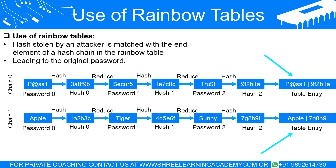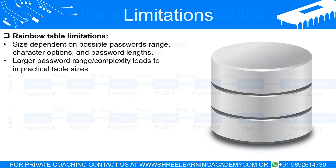Let's use an example to explain this. An attacker has stolen the hash 'abcd', and in their rainbow table they find that 'abcd' is the end element of a hash chain that started with '1234'. The attacker then computes the hash chain starting with '1234' until they arrive at 'abcd'. The password immediately before 'abcd' in the chain is the original password that was used to create the stolen hash.